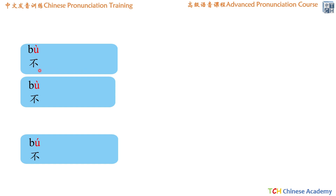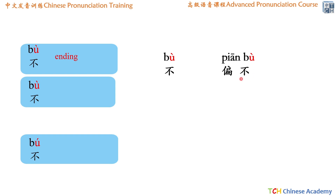As we can see, this character has two tones. One is the fourth tone — the falling tone — bù. And the other one is the second, rising tone — bú. The fourth tone, bù, is the original pronunciation of this character, meaning it is pronounced bù by itself, or in a phrase which ends with the character 不. For example, by itself we say bù, and the phrase 偏不 (piān bù) also ends with 不, so it's also a falling tone.